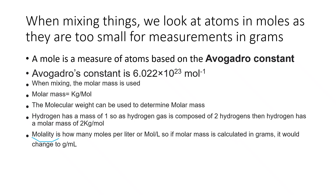Instead of having 1000 grams here — one kilogram — you would have one gram per milliliter. Remember, a milliliter is one-thousandth of a liter.